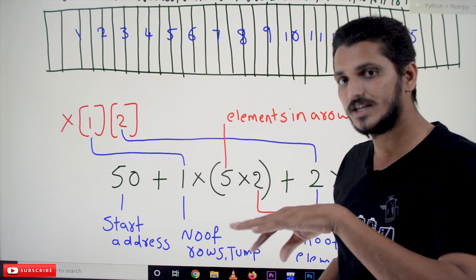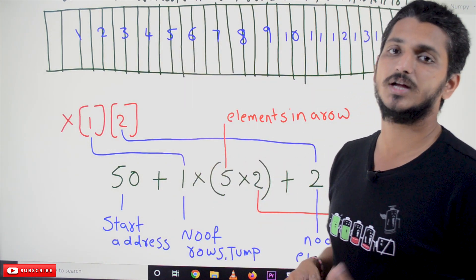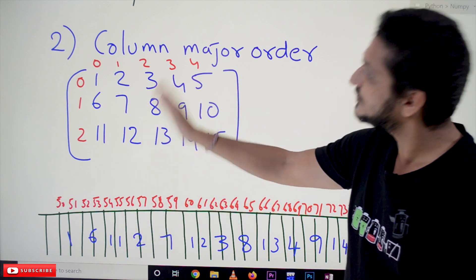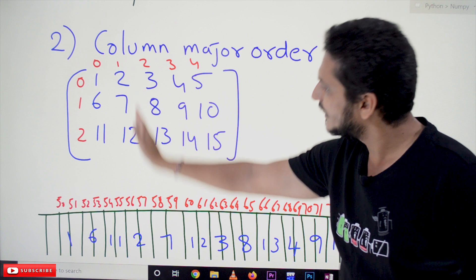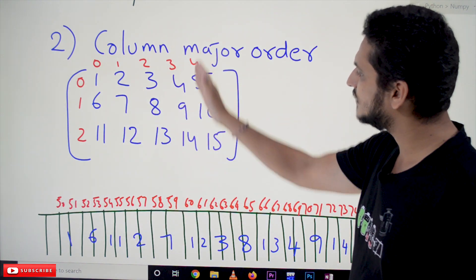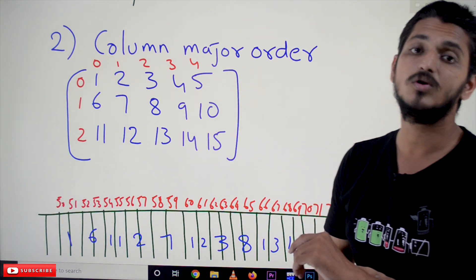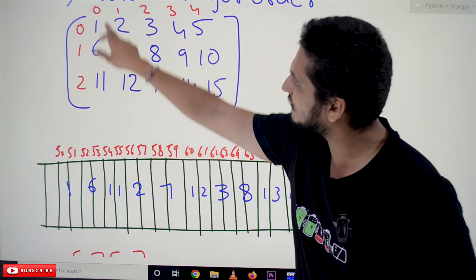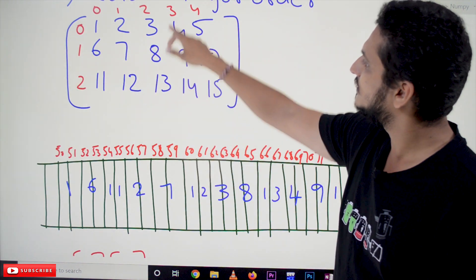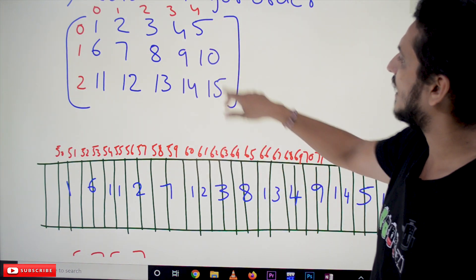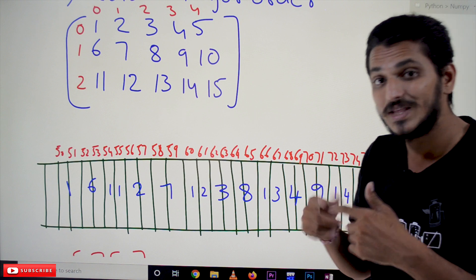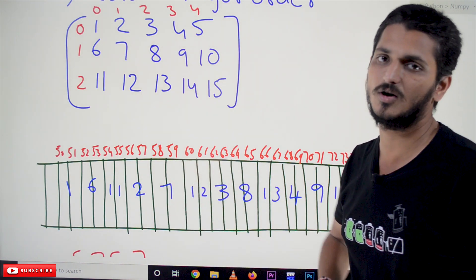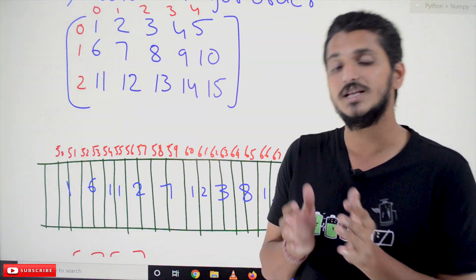Whatever element we need, Python calculates that index value and retrieves the element from that memory location. Now let's understand what column major order means. Instead of taking rows and placing them sequentially, we take columns. Take the first column and place it, then the second column, then the third, fourth, and fifth column — that is column major order. So 1, 6, 11 is the first column, then 2, 7, 12, then 3, 8, 13, then 4, 9, 14, then 5, 10, 15.